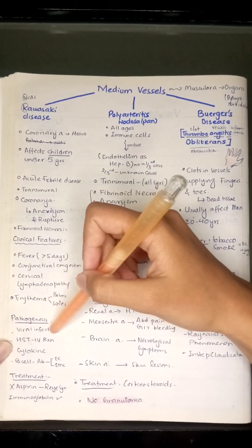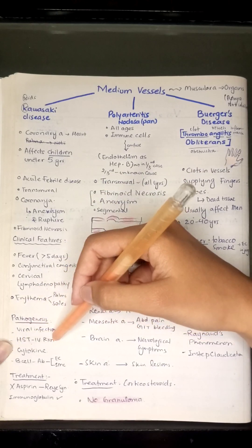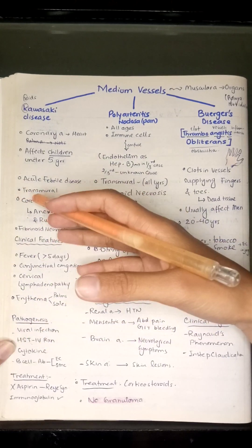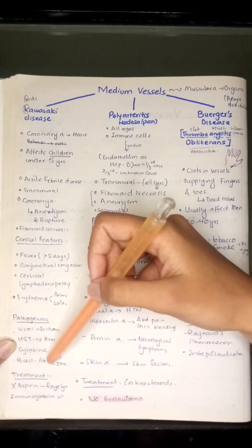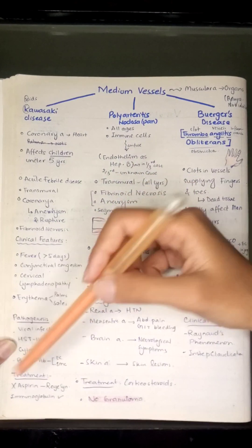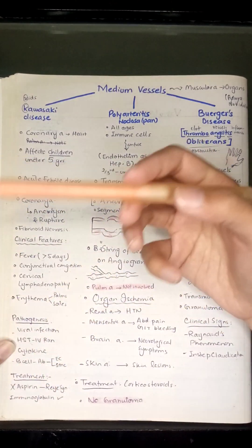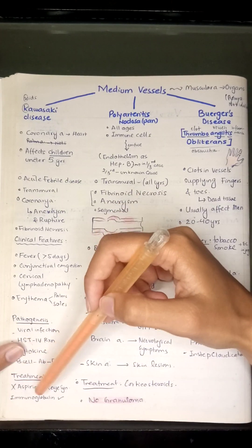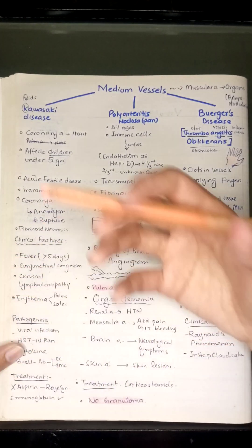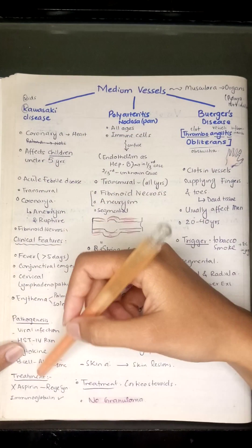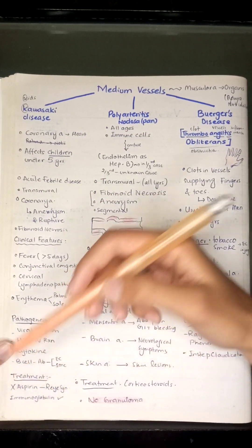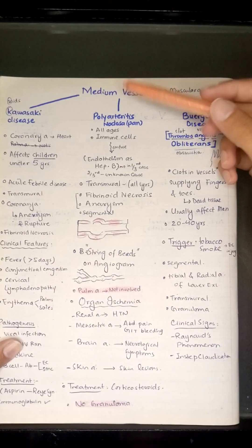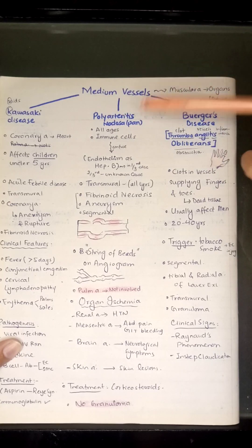The pathogenesis of Kawasaki disease involves a viral infection and a hypersensitivity type 4 reaction. Cytokines are released and B cell antibodies are produced — specifically antibodies against endothelial cells and smooth muscle cells. The treatment of Kawasaki disease does not include aspirin, as aspirin causes Reye syndrome in children. Immunoglobulins are the preferred treatment.